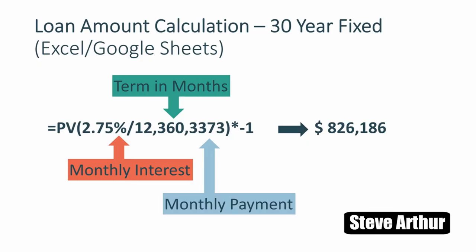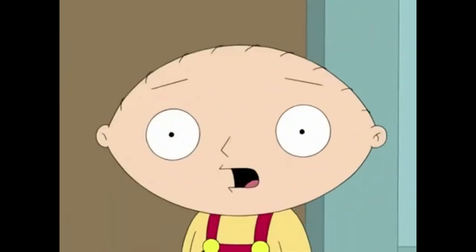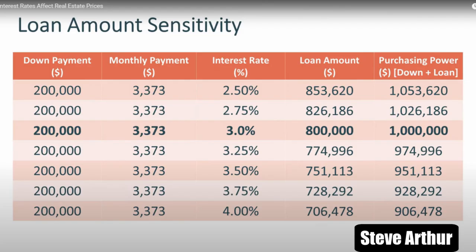You can calculate the loan amount by using the present value formula in Excel or Google Sheets, inputting the monthly interest rate, term, and monthly payment. If we fill the table with lower and higher interest rates, at 2.5% the purchasing power increased by roughly $53,000 — that's huge, or roughly a 5% increase from our $1 million baseline. At the other extreme, at 4% interest rate, the purchasing power decreases by almost 10% to $900,000 from our original $1 million baseline.